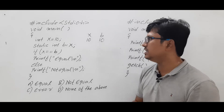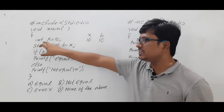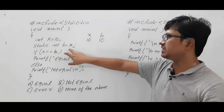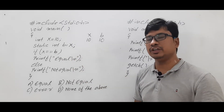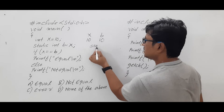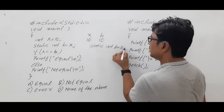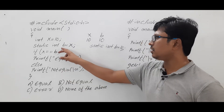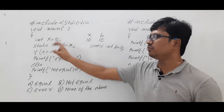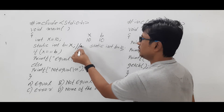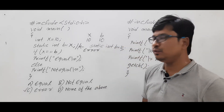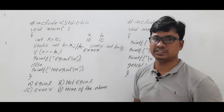Look at this statement: 'static int b = x'. This is a static variable. Whenever you declare and initialize a static variable, you must initialize it with a constant value. Here, 'int x = 10' is a valid declaration and initialization because 10 is a constant. But 'static int b = x' is assigning a variable value to a static variable — this is not valid. If you had written 'static int b = 10', it would be valid and the output would be 'equal'.